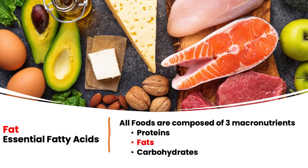The second macronutrient is fat, and these are composed of fatty acids. Foods such as avocados, full-fat dairy, and some fatty cuts of meat are going to have a lot of fat. There are some essential fatty acids, such as the omega-3s, meaning our body can't produce those fats. So if we eat a zero-fat diet, eventually we're going to get sick as well.